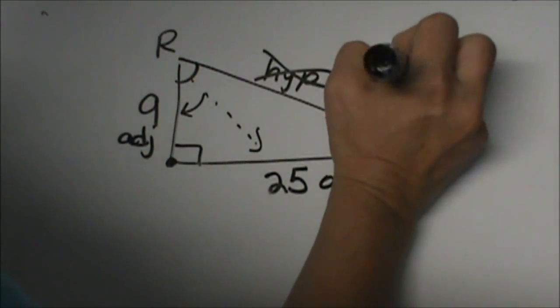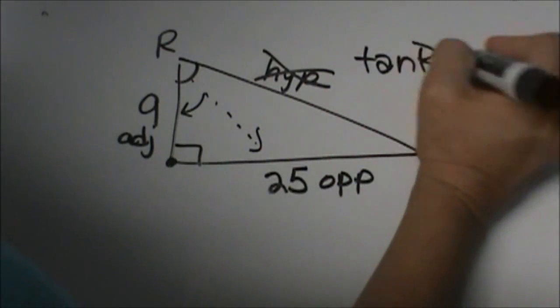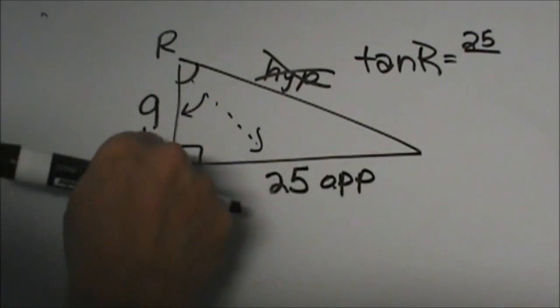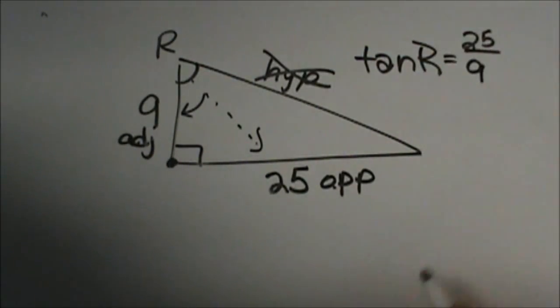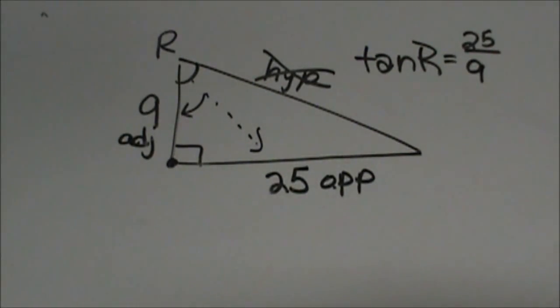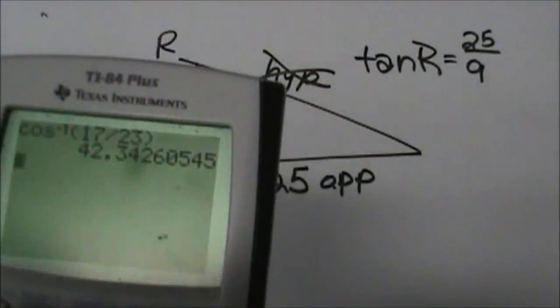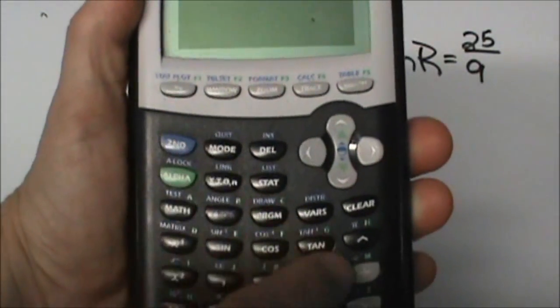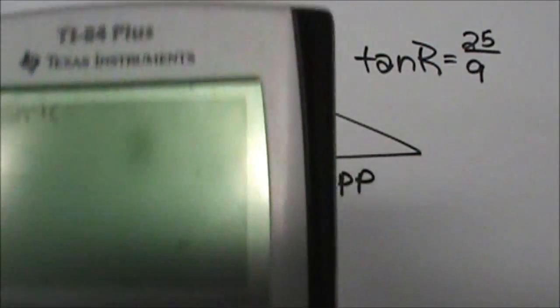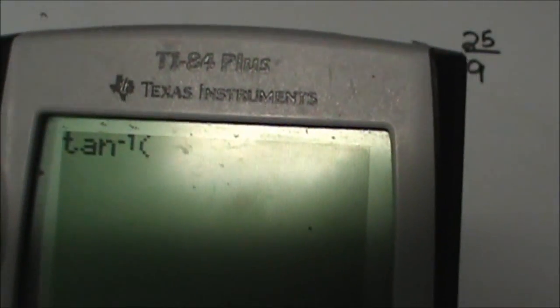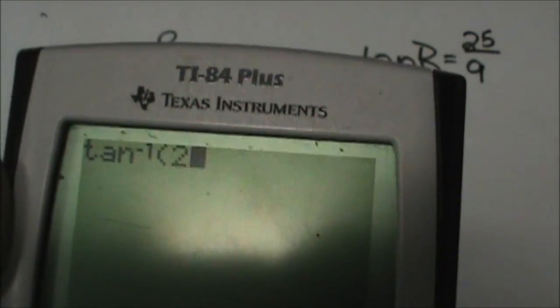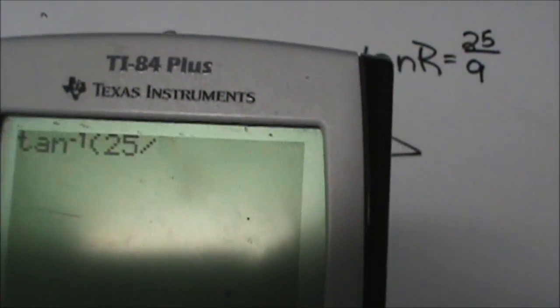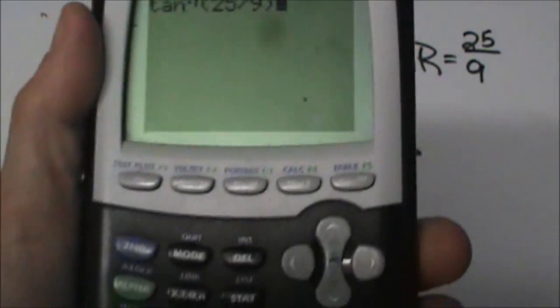So the tangent of R is equal to the opposite, or 25, over the adjacent, which is 9. And now we are going to use our inverse trig. So grab your calculators and take second tangent. You should get tangent to the negative 1, and this one is 25 divided by 9.